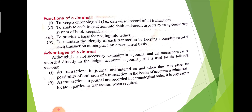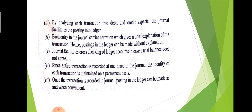Advantages of journal: As transactions are entered as and when they take place, the possibility of omission is reduced. Transactions in the journal are recorded in chronological order, so it is easy to locate a particular transaction — if we know the date, we can easily find that transaction. By analyzing each transaction into debit and credit aspects, the journal facilitates posting into the ledger, meaning we transfer all information from journal to ledger. Each entry in the journal carries narration, which is the brief explanation of the transaction.